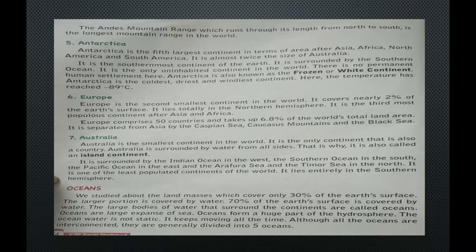Australia is the smallest continent in the world and the only continent that is also a country. Australia is surrounded by water from all sides, which is why it is also called an island continent. It is bounded by the Indian Ocean in the west, the Southern Ocean in the south, the Pacific Ocean in the east, and the Arafura Sea and Timor Sea in the north. It is one of the least populated continents and lies entirely in the Southern Hemisphere.